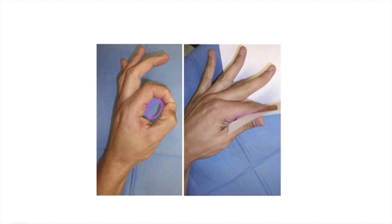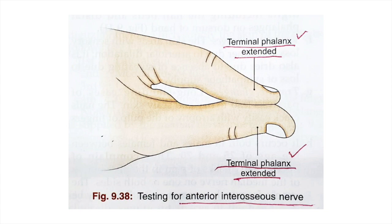The patient adducts the thumb toward the index finger using palmar interossei and adductor pollicis — all innervated by the ulnar nerve — grasping the paper in this abnormal way. This sign confirms injury of the median nerve, including the anterior interosseous nerve, if the injury is above the elbow.